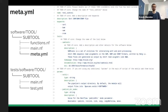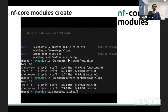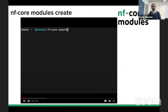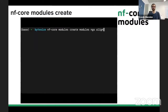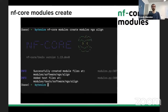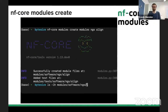Instead of copying them, you can use the NFCore modules create command. You just type NFCore modules create, point it to the modules directory, and then type in the name of your module. This will create the directory and all the files you need. In this case, we have the NGS tool with the sub-tool align, and it creates all the main files, the test files with the module name already in there, and also appends a few lines to the filters.yaml file so that your tests are run once you have them written out.